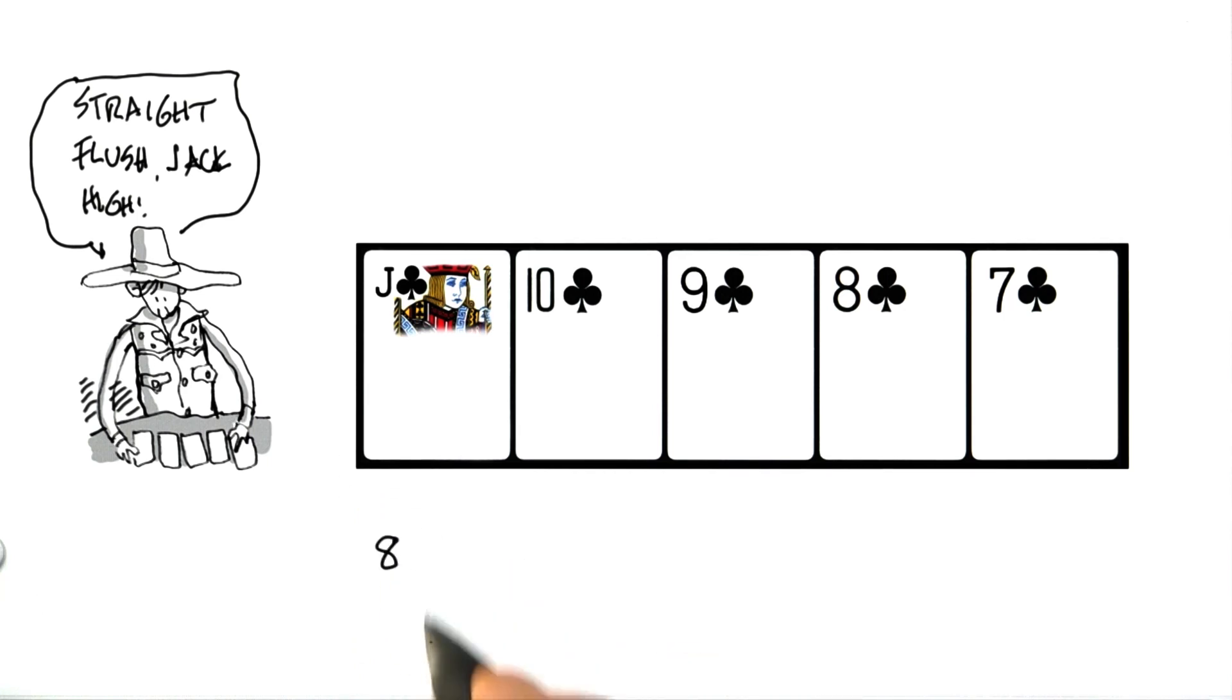That's all you have to know about the hand. A straight flush, the highest ranking, and then the tiebreaker. All we have to know is that the jack is the high card. The number 8 stands for straight flush, and the number 11 stands for jack, and that completely describes the hand.